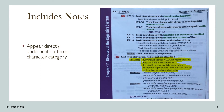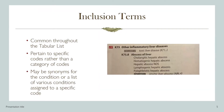Includes notes appear directly underneath a three-character category to further define and give examples of the content included in the category. For example, the includes notes list a number of conditions included in the category K-72. This means that the conditions listed in the includes notes may be coded with codes starting with K-72. Inclusion terms are also common throughout the tabular list. These work similar to includes notes, but instead pertain to specific codes rather than a category of codes.